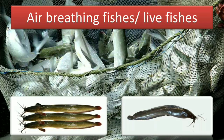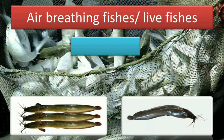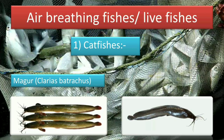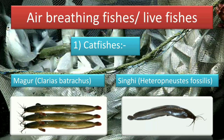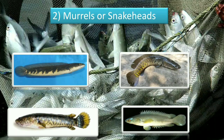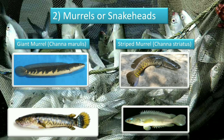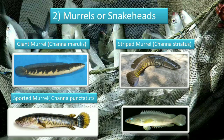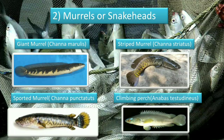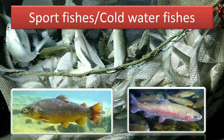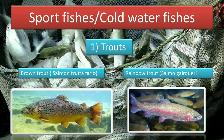Next are air-breathing fishes or live fishes. In this category there are catfishes: first is Magur, also called Clarias batrachus, and second is Singi, also called Heteropneustes fossilis. Then in murrels or snakeheads: giant murrel — Channa marulius; striped murrel — Channa striatus; spotted murrel — Channa punctatus; and climbing perch — Anabas testudineus. These four species are included in the murrel or snakehead group.